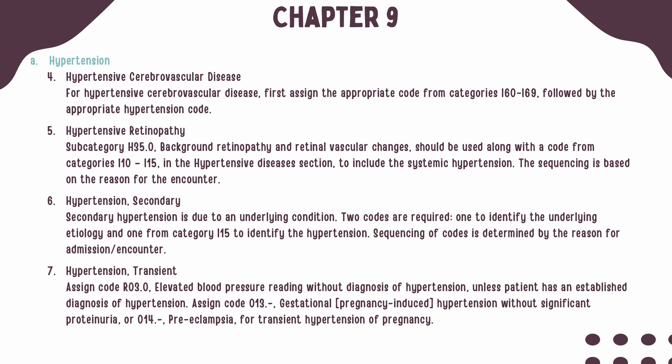If hypertensive cerebrovascular disease is present, first assign a code from Categories I-60 through I-69 to indicate the cerebrovascular disease, followed by the appropriate hypertension code. When hypertensive retinopathy is documented, two codes should be reported: a code from Subcategory H-35.0 to represent the retinopathy, as well as a code from Categories I-10 through I-15 to represent the hypertension. Sequencing for these codes should be based on the circumstances of the encounter.